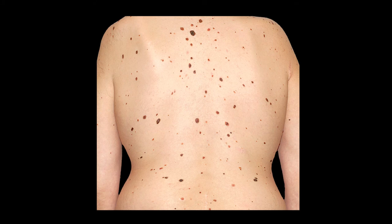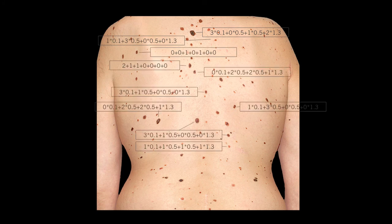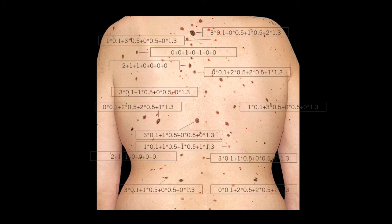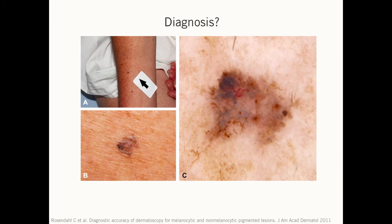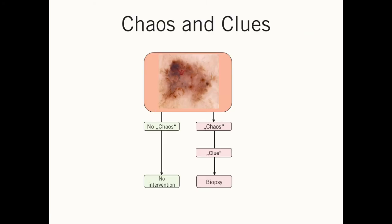When you have these kinds of patients and have a lesion, you have to do a very complicated calculation — and not just for one lesion, but for a lot of lesions. When you have to do this, you will never finish just one patient in a day. When you look at one lesion, you want to know the diagnosis, but what you really want to know is the decision: do you have to cut it out, or can you leave it on the patient? The chaos and clues algorithm deals with exactly that question.